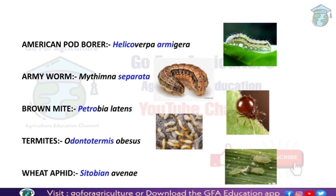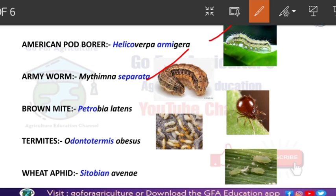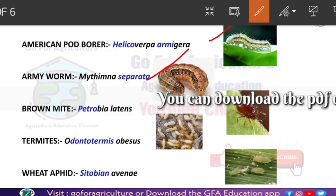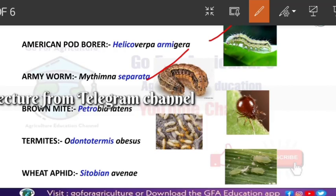You can also see the picture of Army Worm. American Pod Borer's scientific name is Helicoverpa armigera. Army Worm's scientific name is Mythimna separata. The army soldiers got separated to kill the termites across the large wheat field.